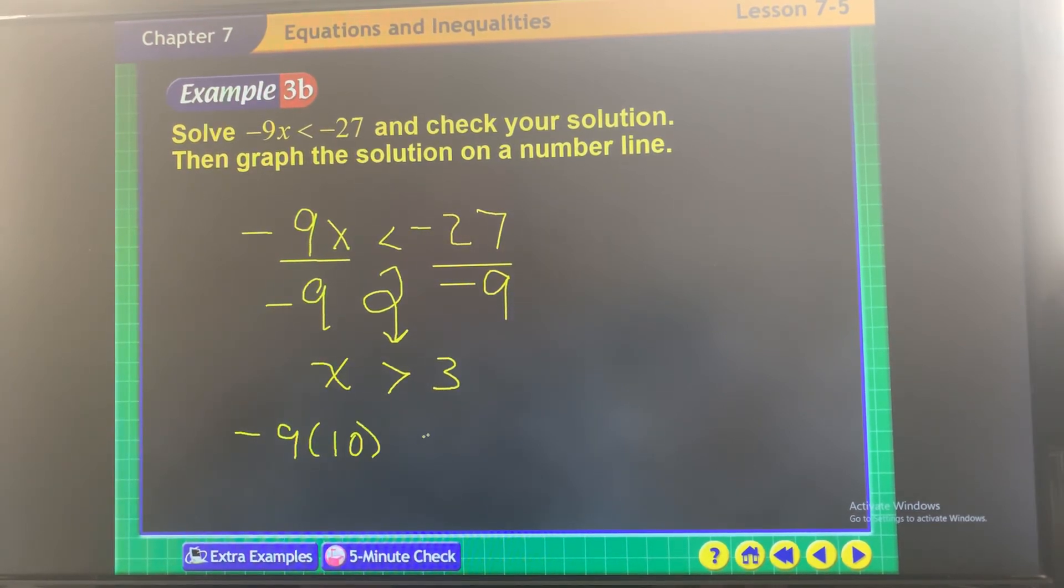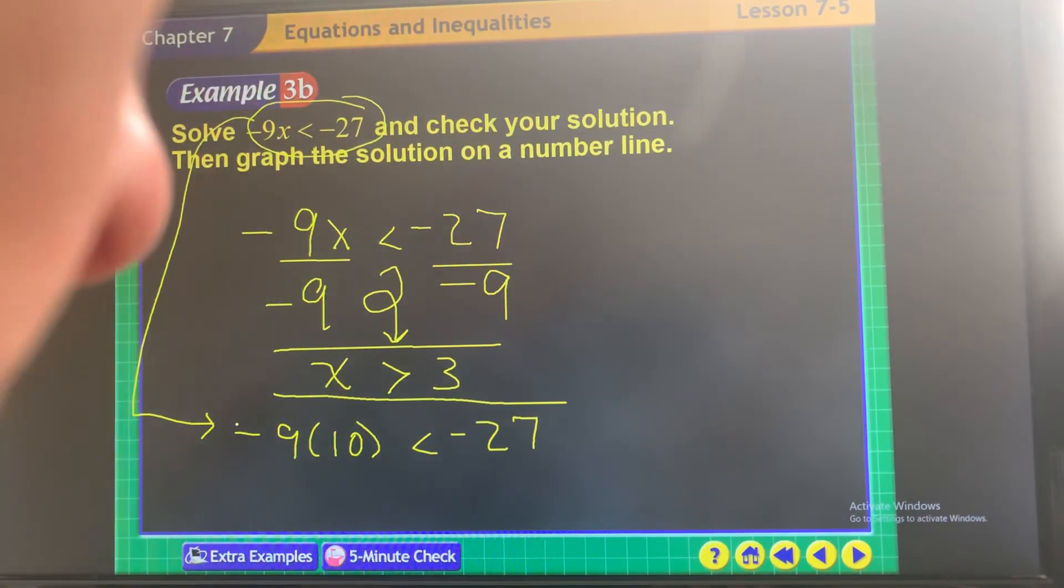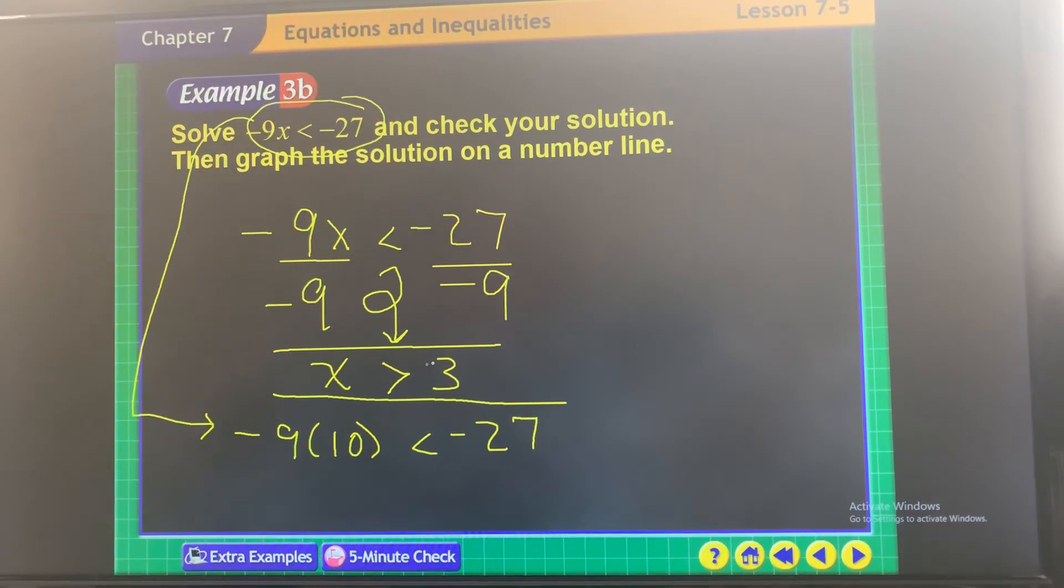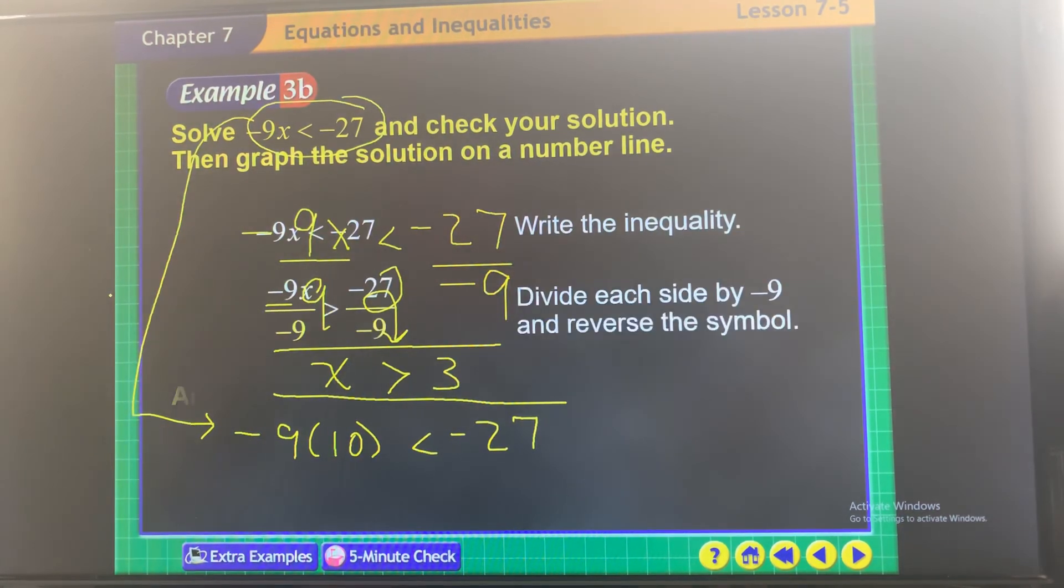Now remember, you only flip it for the solution. Then you go back to the problem to check it in the unflipped version. So the only place it's flipped is right here in the solution. So you can pick a value greater than 3. Once you do, then you put it back to the unflipped version, the original. You always check back in the original.